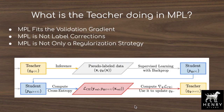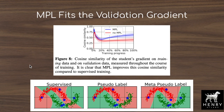The authors analyze the teacher network's behavior in the MPL framework. The teacher fits the validation gradient — it is not simply performing label correction or acting purely as a regularizer. Experiments on the two-moons dataset show cosine similarity between training and validation gradients, demonstrating that the teacher steers the student's training gradient toward the validation gradient direction throughout training.